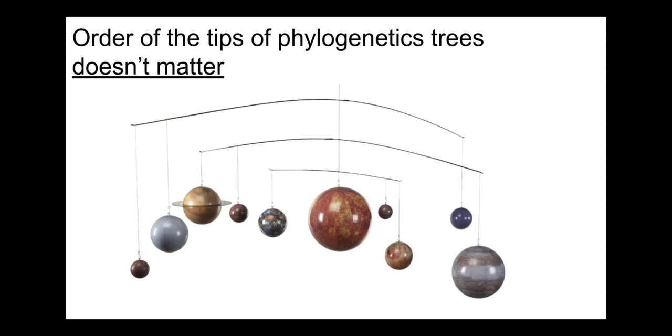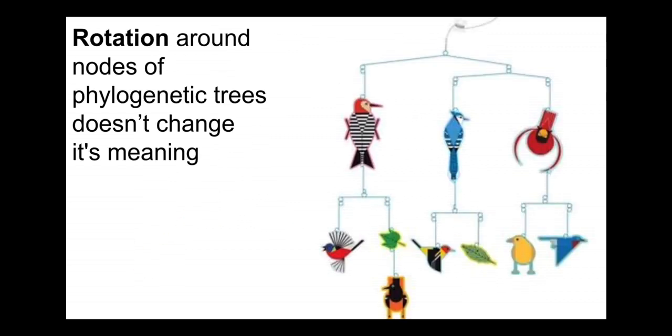Here we're using animals so there's no confusion with the order of the planets. Again, these rotation points - a mobile can spin around above a baby's crib on these points. These are nodes, just like on a phylogenetic tree. We can spin around on a node without changing the structure of the tree.